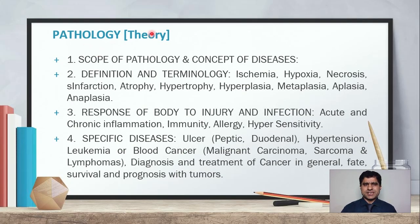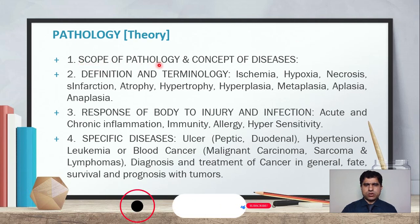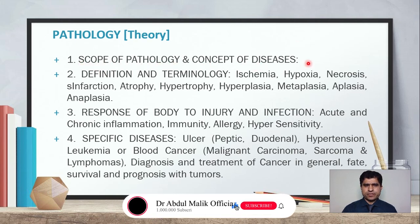This subject is commonly studied in one semester. Pathology theory has three credit hours and one practical credit. The first chapter is the scope of pathology and concept of diseases. The second is definitions and terminology — for example, what is ischemia, hypoxia, necrosis, infarction, atrophy.